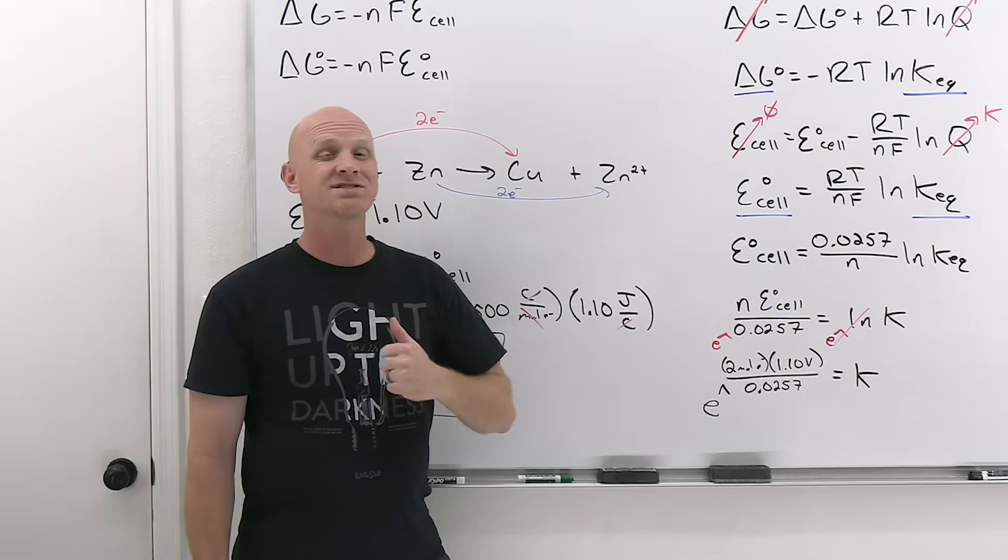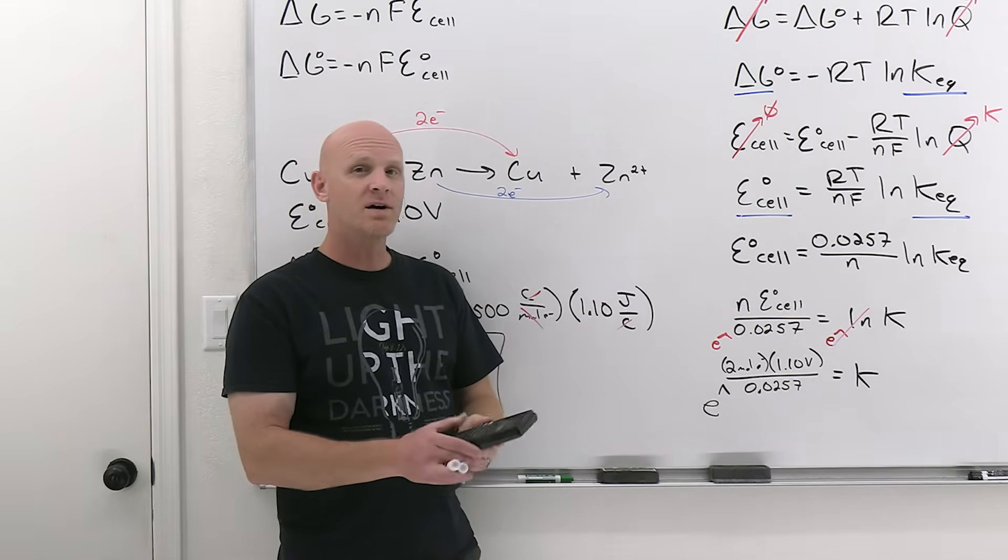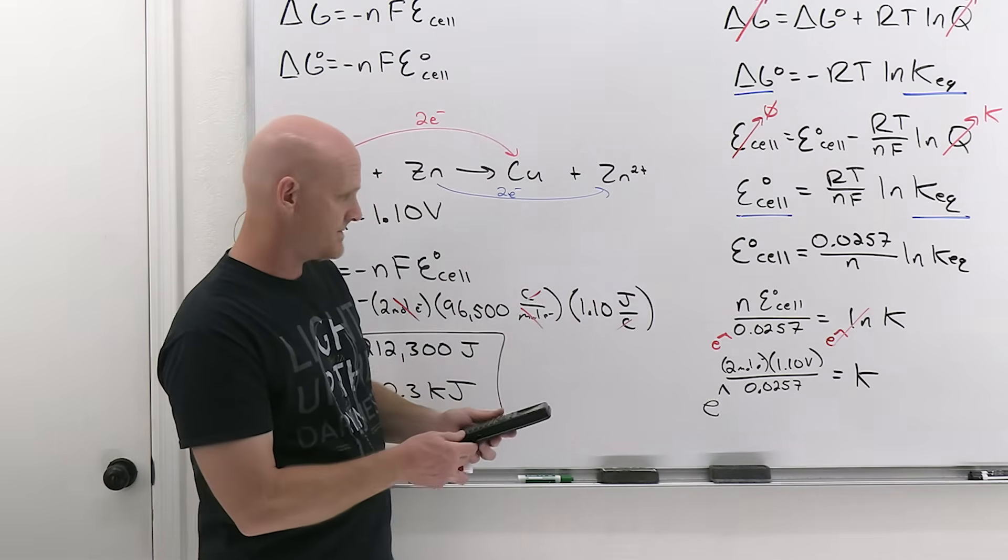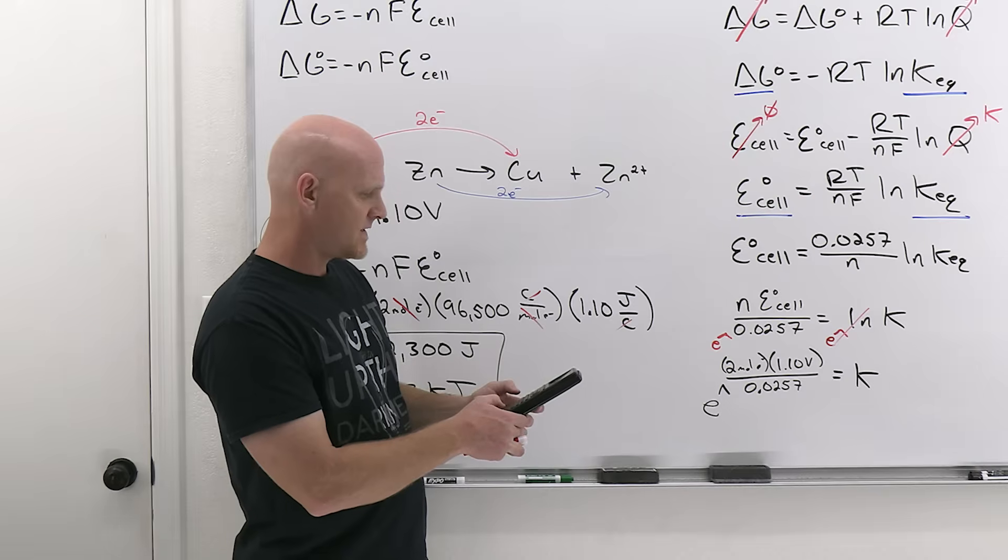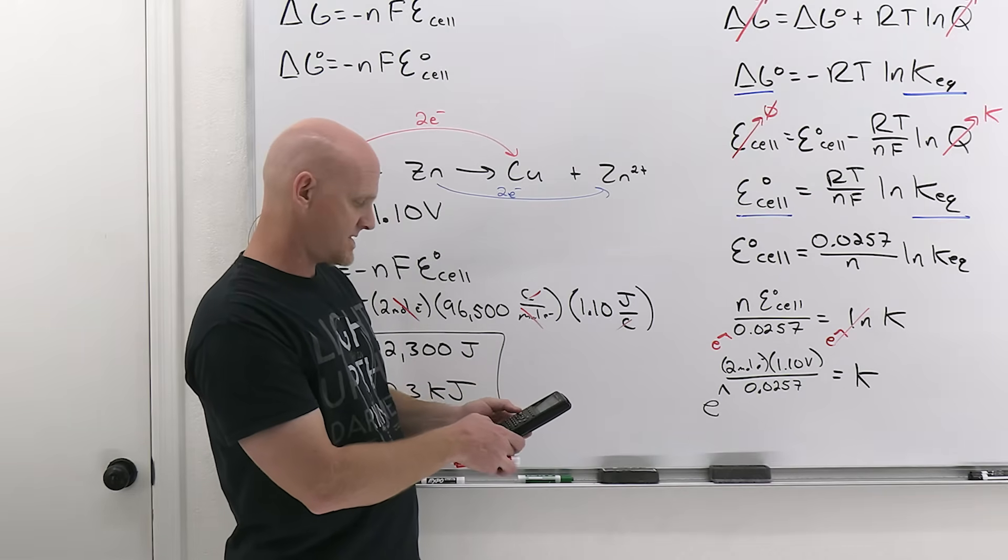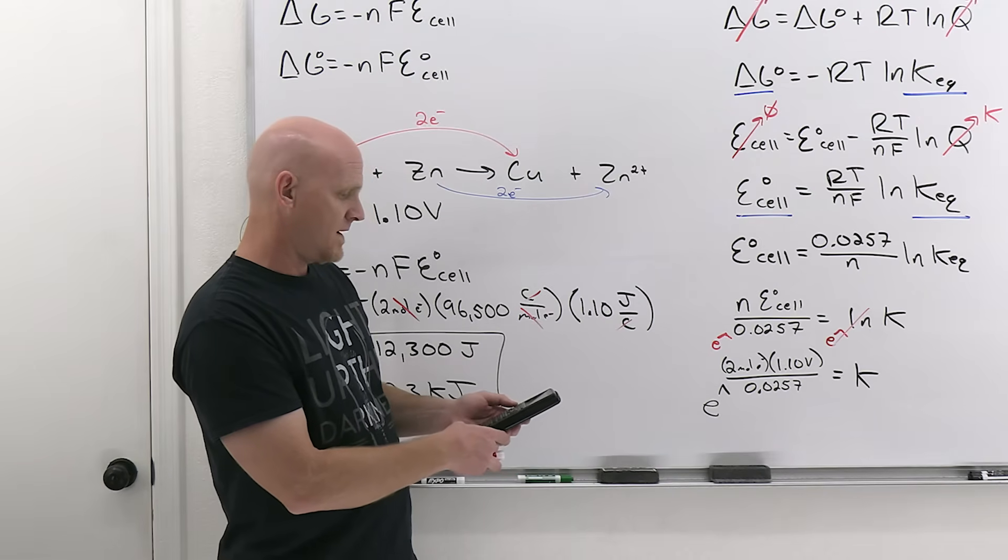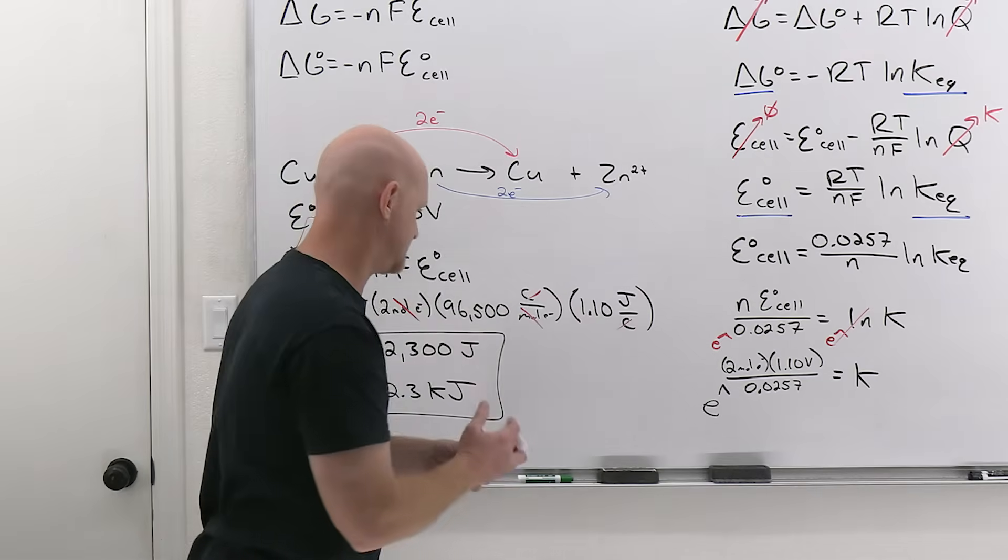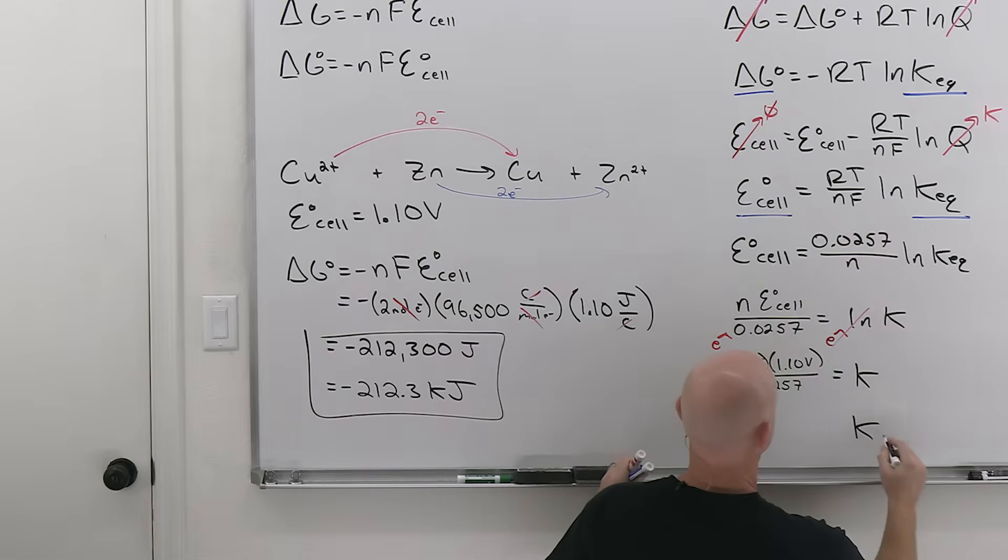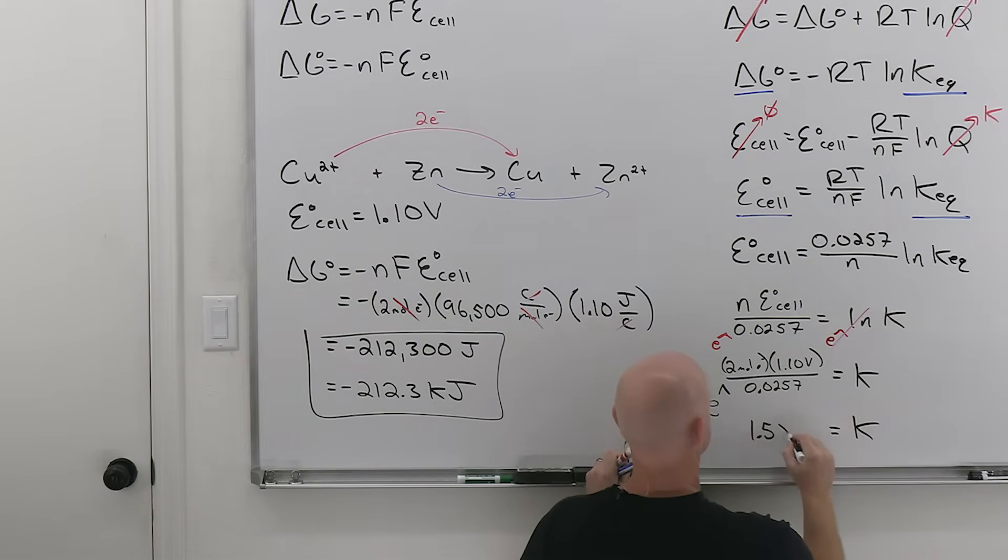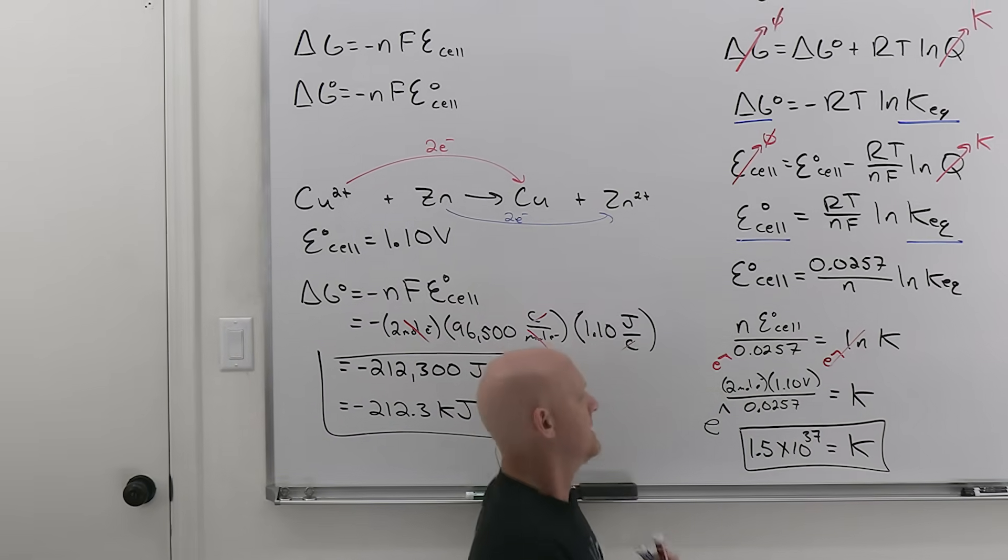And we should expect the equilibrium constant, this reaction being spontaneous under standard conditions, is going to favor the products and in this case, it's very spontaneous. So favor them heavily, which is why we should expect the equilibrium constant to come out much, much larger than one. All right. So two times 1.1 divided by 0.0257. And then we're going to do e to the 85.6 here. That's going to be a big number. 1.5 times 10 to the 37. So reaction that heavily favors the products at equilibrium.